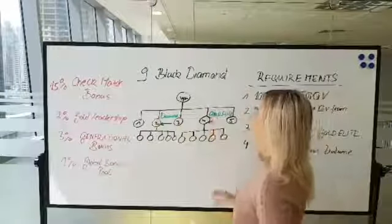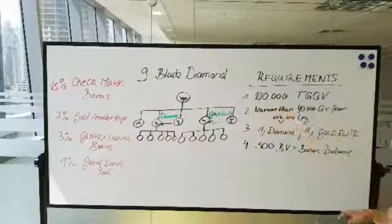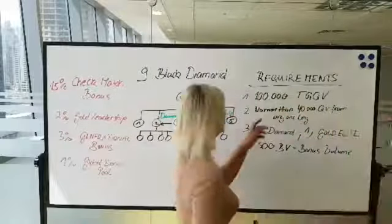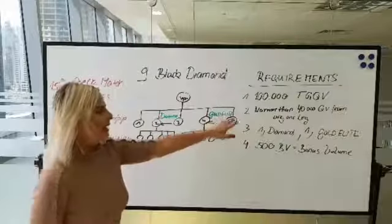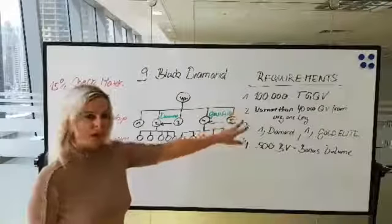Then you have the structure for black diamond. Requirements are you need to have 100,000 total group qualification volume. Again, no more than 40,000 qualification volume can come from any one leg.